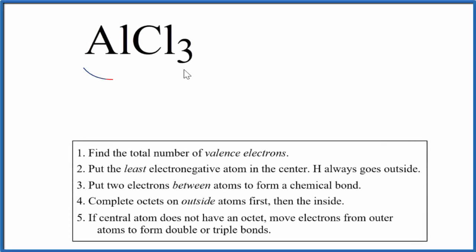Let's draw the Lewis structure for AlCl3. This is called aluminum tri-chloride. So the first thing we do with Lewis structure is we count the total number of valence electrons. Let's look at the periodic table for that.